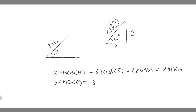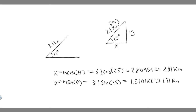For the north component, it's going to be 3.1 — the magnitude m — times the sine of our direction, which is 25. So 3.1 times sine of 25. When you do this you're going to get 1.3101166 and so on. I'm just going to round to 1.31 kilometers. This is the y component, which is how far north. So 2.81 kilometers east and 1.31 kilometers north.